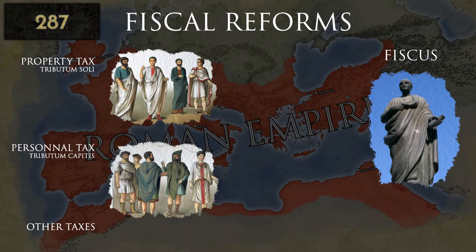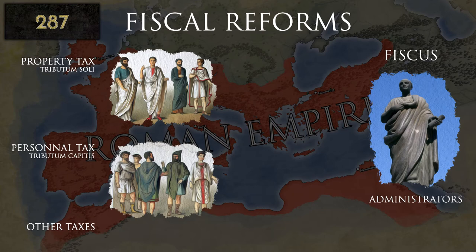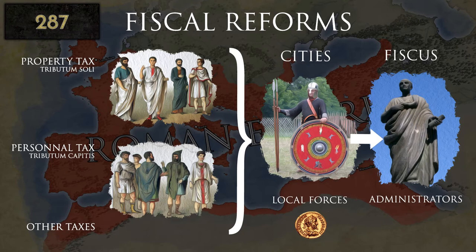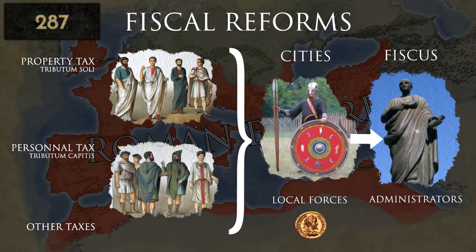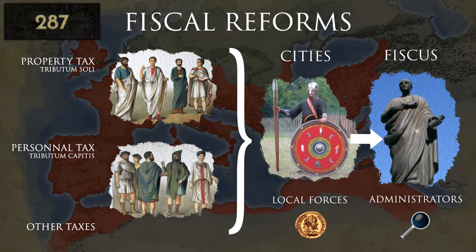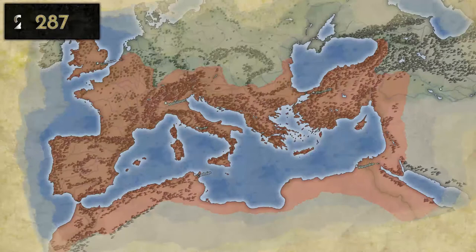Taxation was now done by a single administration called the Fiscus. It was headed by a member of the equestrian class, the Rationalis Summae. He had under his orders many officials who worked in the provinces. The tax collection was left to the local forces, which handed it over to their representatives. The amount of tax paid did not really increase, at least not for everyone. What made it unpopular was that the administration now kept a vigilant eye on the population and, in addition, it ended privileges. Despite this, it proved to be a successful reform.